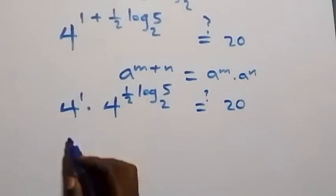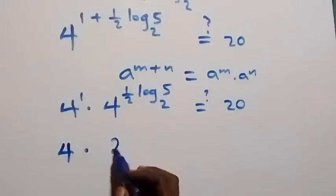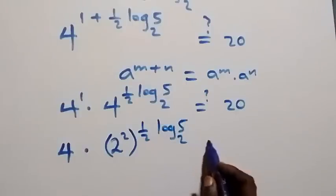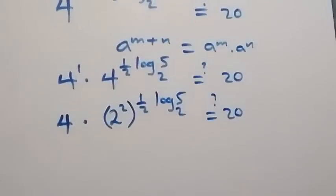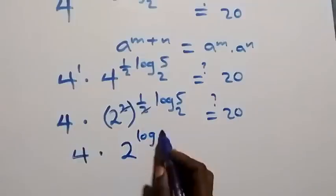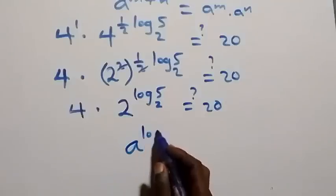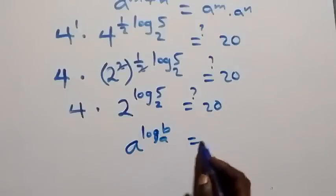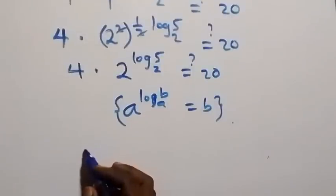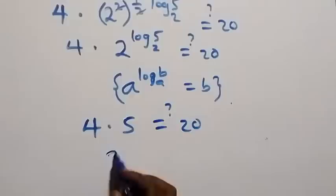Since 4 raised to power 1 is 4, we have 4 times 4 raised to power (half log 5 to base 2). Writing 4 as 2 squared, we get 4 times 2 squared raised to power (half log 5 to base 2). The 2 and the half cancel, leaving 4 times 2 raised to power log 5 to base 2. Recalling the logarithm identity a raised to power log_a(b) equals b, this simplifies to 4 times 5, which equals 20.